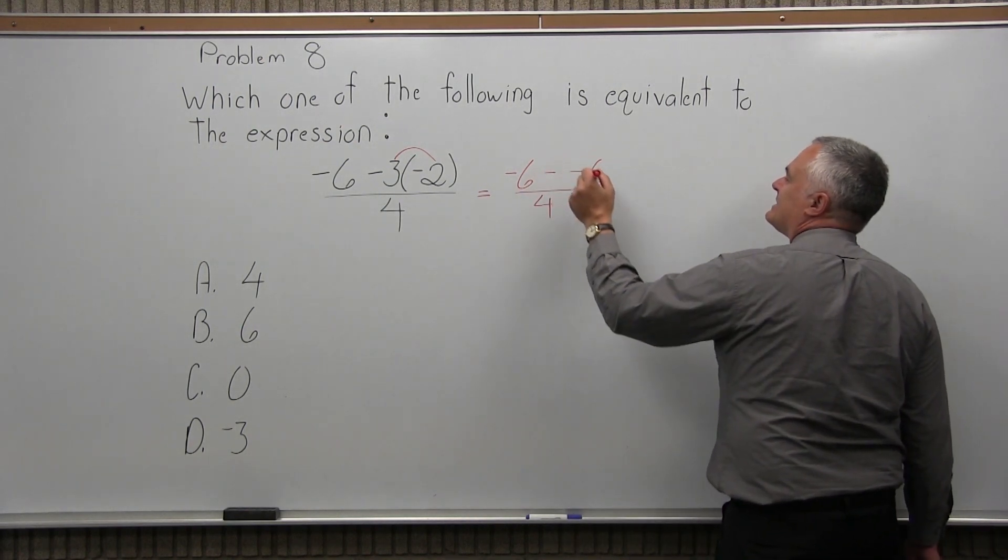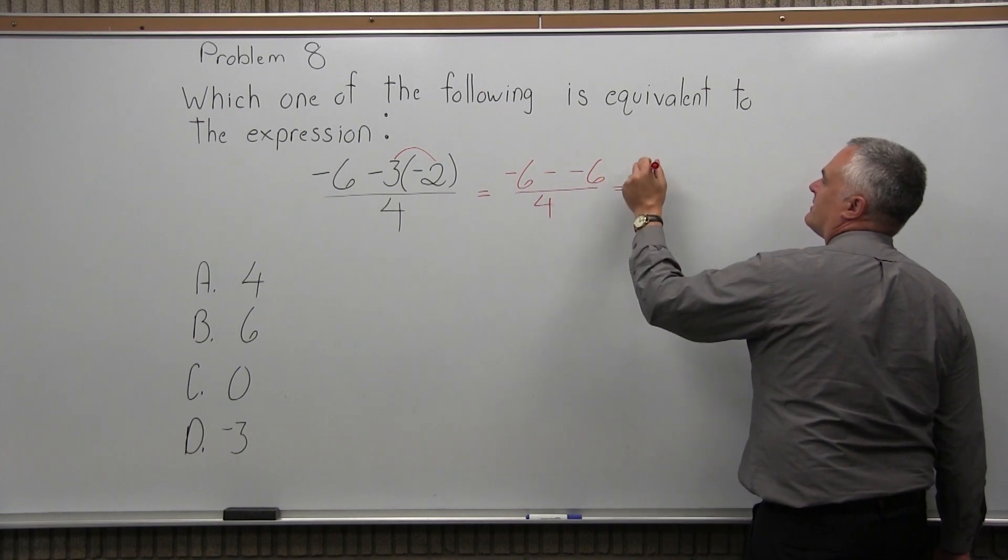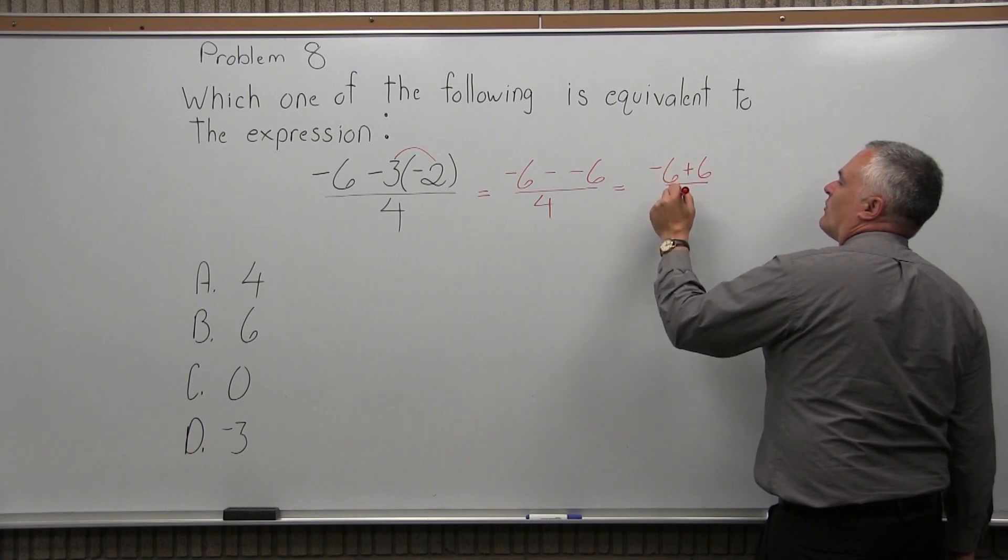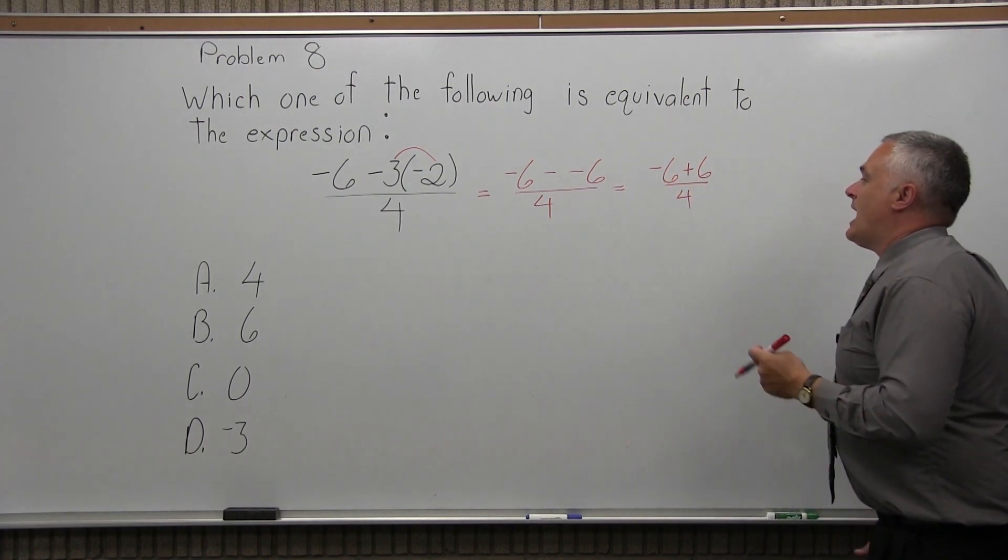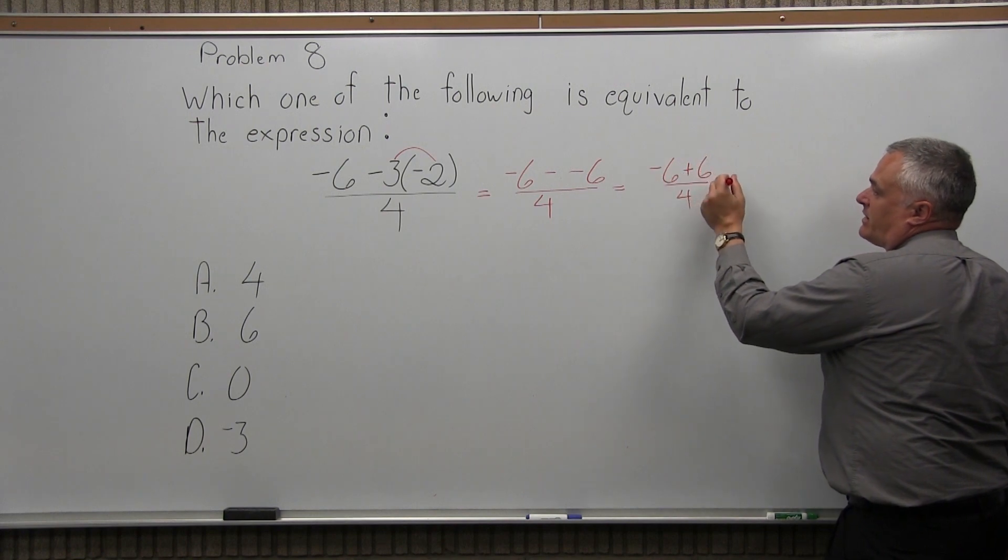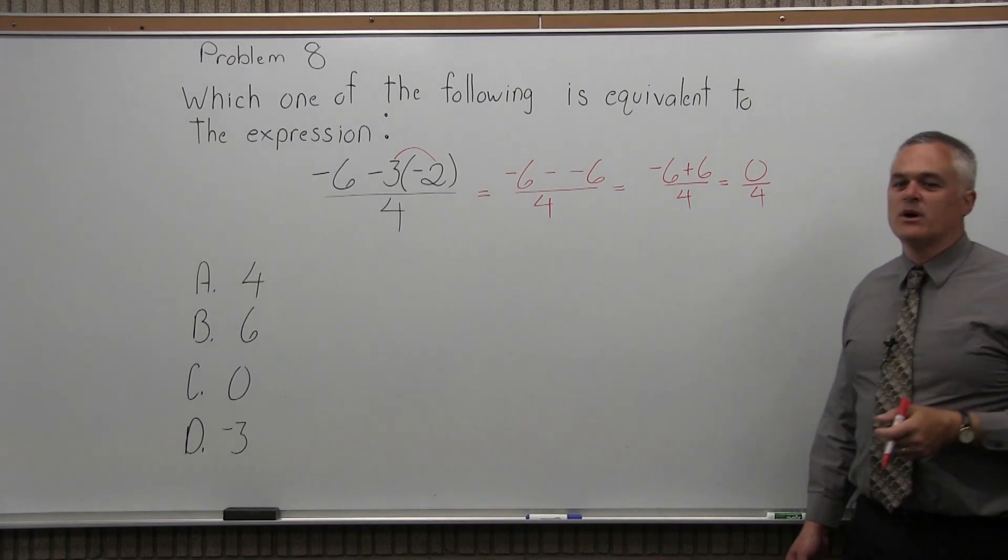Now that minus a minus, when you have the two negatives together like that, they cancel, they become a positive. So what you have is negative 6 plus 6 over 4. Now, get the numerator down to one number, negative 6 plus 6, while they cancel each other off, you have 0. So you have 0 over 4, which means 0 divided by 4.